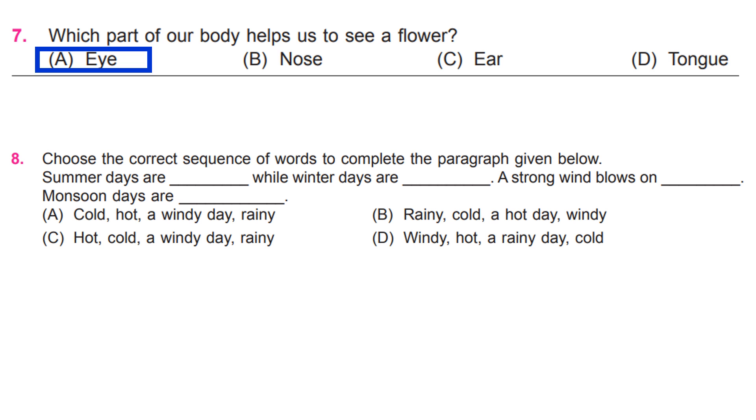Choose the correct sequence of words to complete the paragraph given below. Summer days are dash while winter days are dash. A strong wind blows on dash. Monsoon days are. C Hot, Cold, A Windy Day, Rainy.